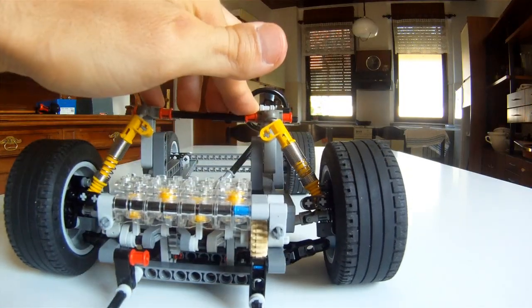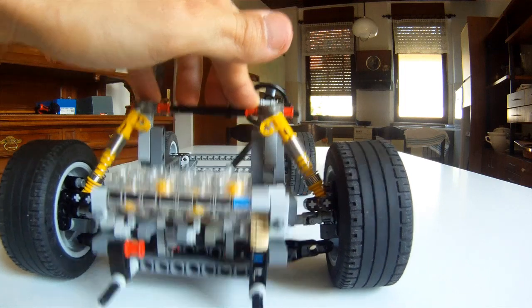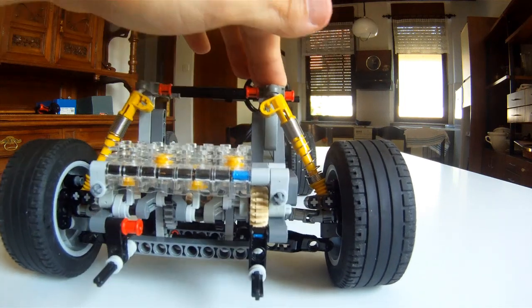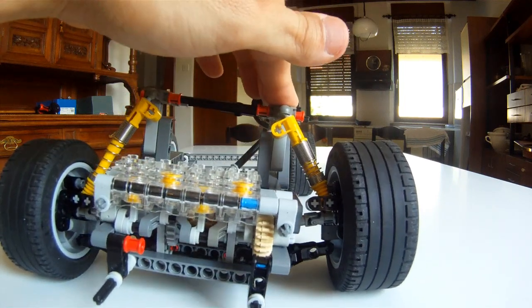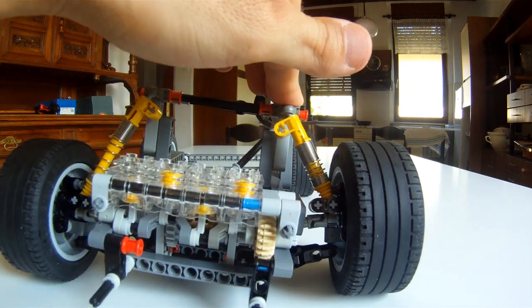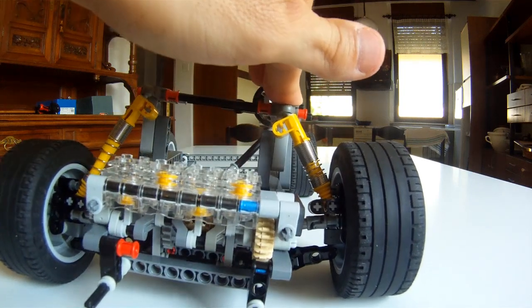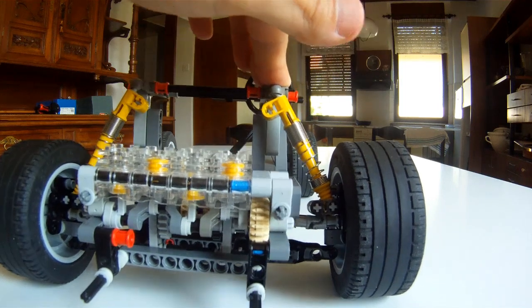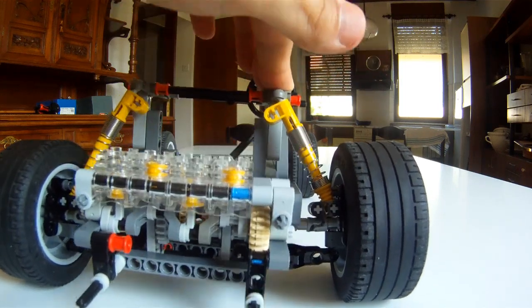When observing how the suspension works, we see that this time the camber angle of the wheel does change when only one side of the vehicle gets compressed. This is something that unequal length wishbones solved, but here we do not have that luxury. A small trade-off for simplicity.